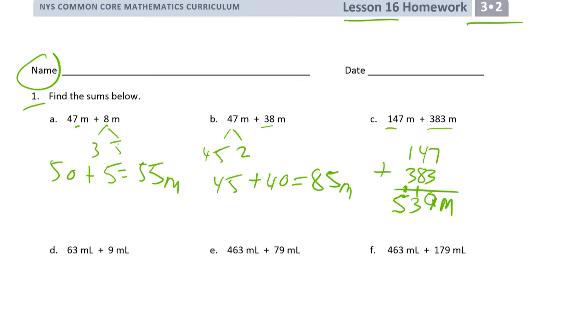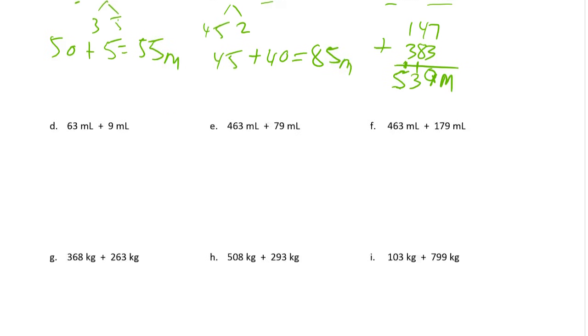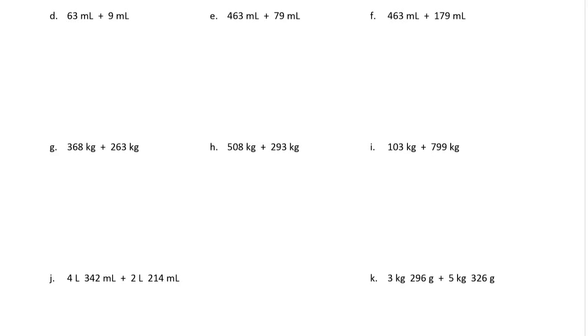Make sure that's readable here. 63 plus 9. So this is going to be easier to think of this as a 62 and a 10. And that's going to make a 10 right there. So we've really got 62 plus 10 and that's really easy to do mentally. So that's 72 milliliters.